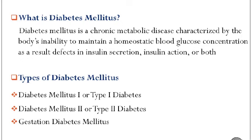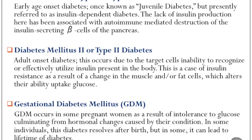Starting now: diabetes mellitus is a chronic metabolic disease characterized by the body's inability to maintain a homeostatic blood glucose concentration, as a result of defects in insulin secretion or insulin action, or both. The types of diabetes mellitus are: type 1 diabetes, type 2 diabetes, and the third is gestational diabetes.